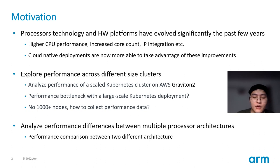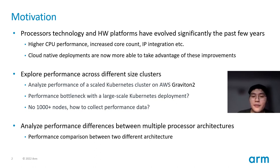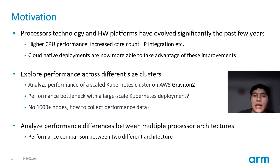Today we will share some Kubernetes performance tests and talks on cloud instances. Our motivation is three points. First, as the hardware platform increases performance, such as higher CPU performance, increased core count, and IP integration, cloud-native deployment could benefit a lot. Secondly, we want to explore performance across different size clusters — here we use AWS Graviton2. Especially, we'd like to figure out the performance bottleneck with a large-scale Kubernetes deployment. We don't have 1000 or more physical nodes, so how do we test and collect performance data? Last, we'd like to analyze the performance difference between different architectures.